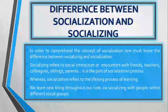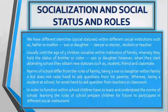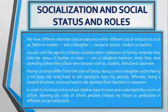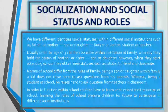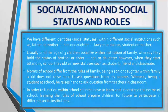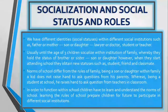In different social groups we have different identities or social statuses within different social institutions, such as father or mother, son or daughter, lawyer or doctor, student or teacher. Usually until the age of three, children socialize within the institution of family, where they hold the status of brother or sister, son or daughter. However, when they start attending school, they obtain new statuses such as student, friend, and classmate.